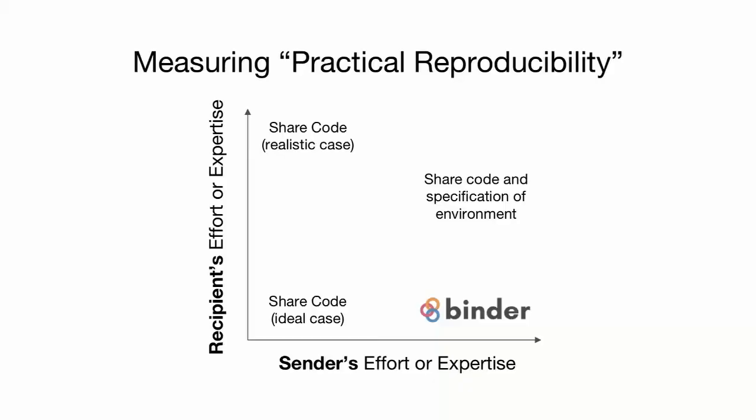A big part of being able to build on each other's work is making something that's practically reproducible — that someone's actually going to take the trouble to put pieces back together and make it work for them. We could think of practical reproducibility as the effort required to send something — package it up in reproducible form — and then the effort from the recipient to run it and make it work. In the bottom left, maybe I just email someone a Jupyter notebook — that's easy for me — but in the more realistic case, they open it up and don't have the right software installed, or don't have GPUs when the code needs them.